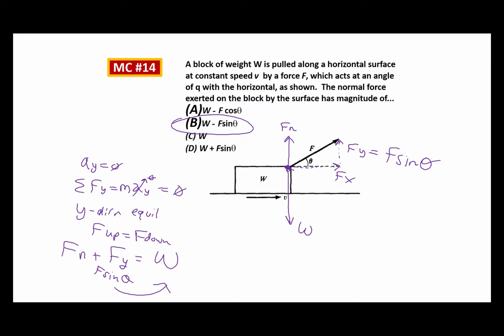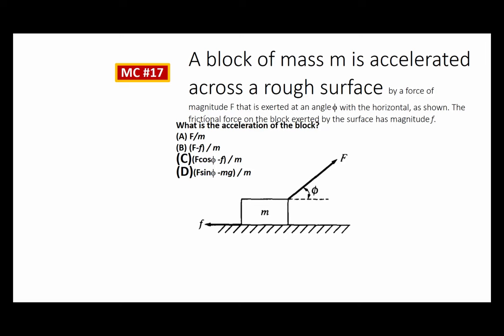Let's do another example, kind of similar. A block of mass m is accelerated across a rough surface by a force of magnitude F exerted at an angle theta with the horizontal. This is a rough surface — AP likes to use a jigsaw line here to show that. That means there's a frictional force acting on the block. Friction always opposes motion, so it acts opposite the direction of movement. I'm going to assume it's accelerating to the right, and use Newton's second law.